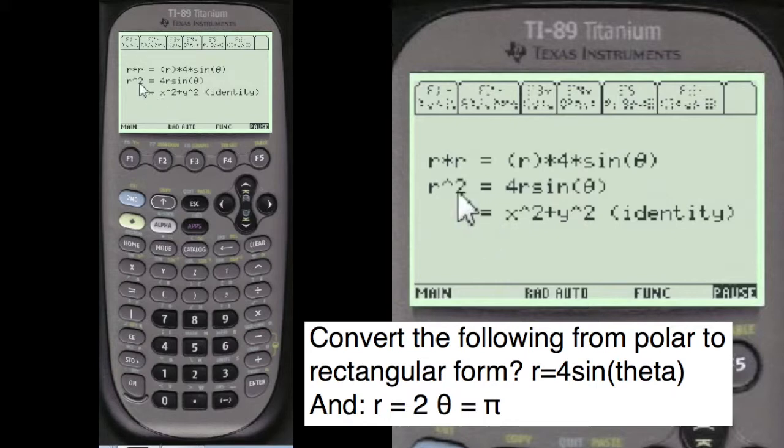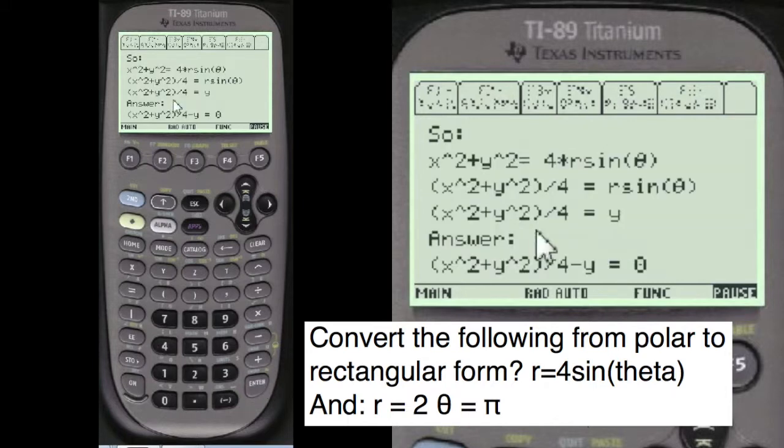And so here's the system. You multiply both sides by r to get it to the identity format, which is r squared. So we have to multiply both sides by r, which we've done here. And r squared is equal to the identity x squared plus y squared. So x squared plus y squared equals 4 times r sine theta. And then we transfer the 4 over to this side, divide both sides by 4.